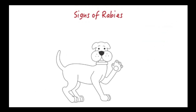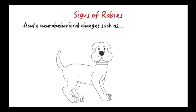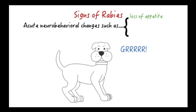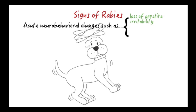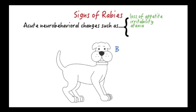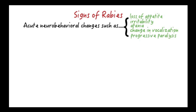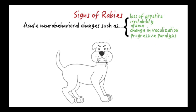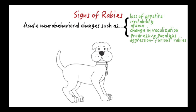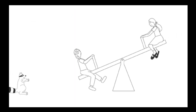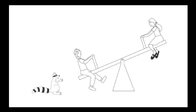Regardless of species, most rabies cases are characterized by acute behavioral changes such as loss of appetite, irritability, anxiety, ataxia, changes in vocalization, and progressive paralysis. Aggressive or vicious behavior — that is, furious rabies — may occur but is not always seen. Abnormal behavior by a wild animal, including loss of fear of humans or daytime appearance in a nocturnal animal, should raise suspicion for rabies in that animal.